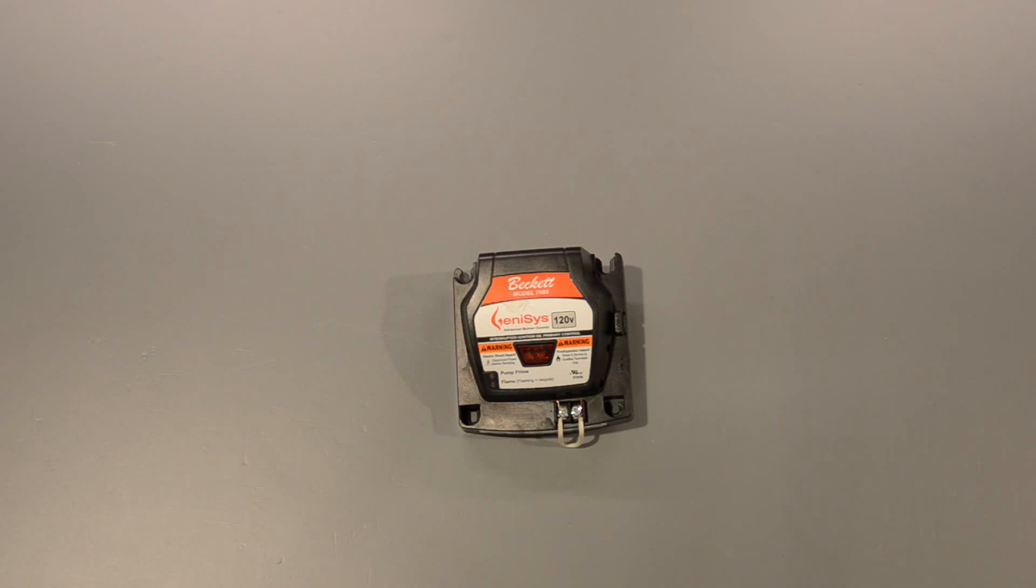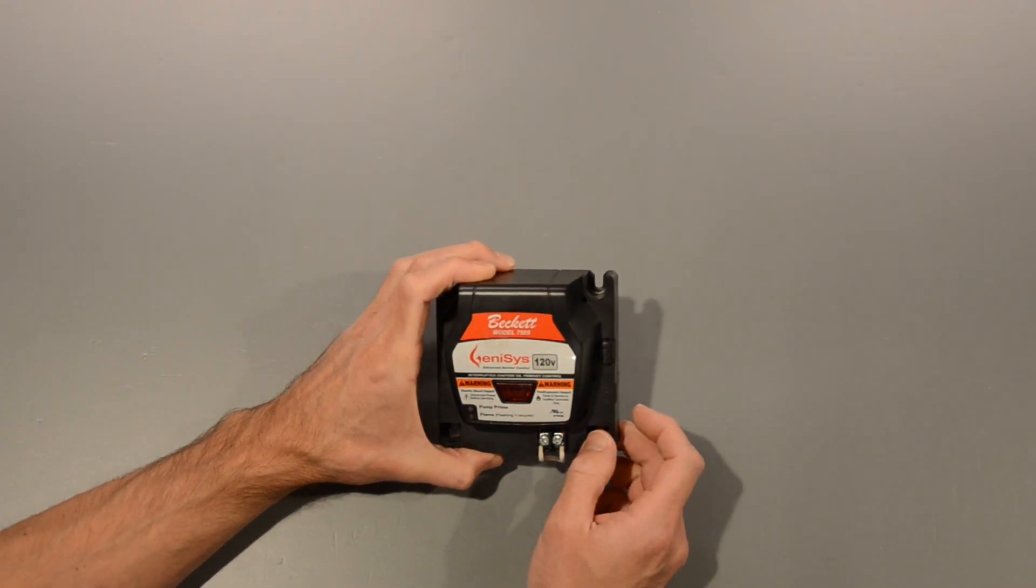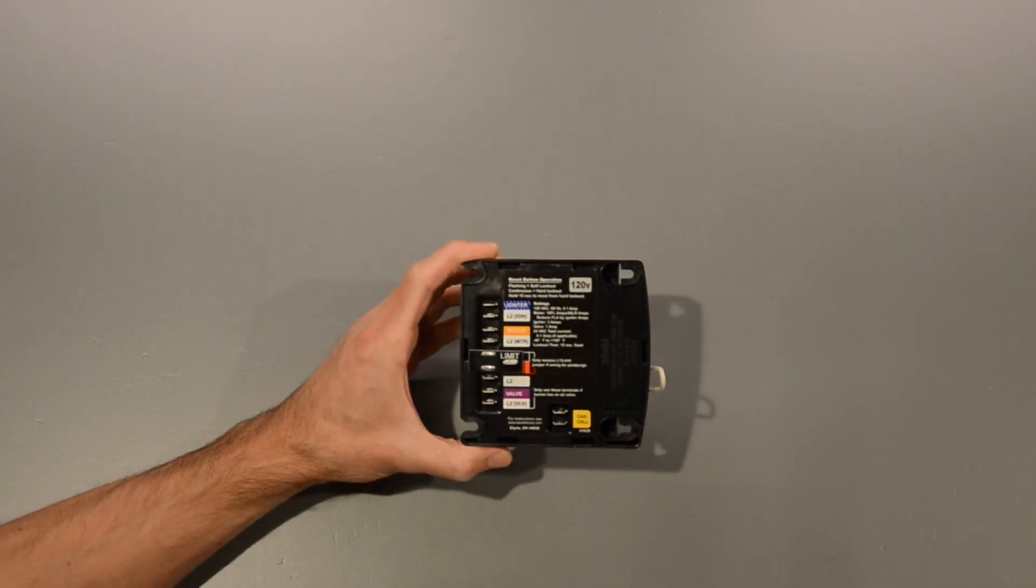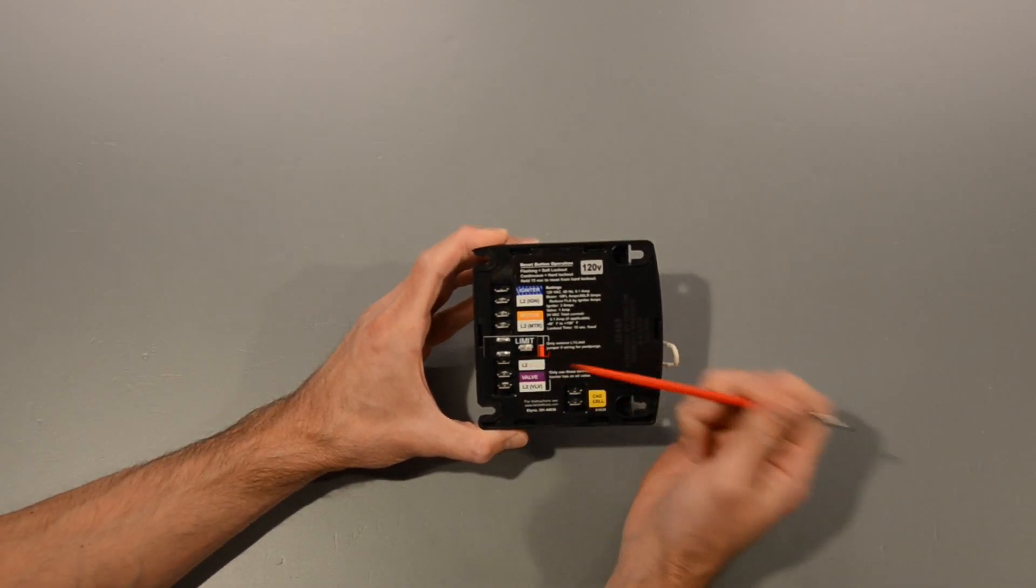The burner for my oil-fired boiler was tripping out on safety, and after some troubleshooting I determined that this burner control was faulty. This is a Beckett 7505, and the way this works is when there's a call for heat, 120 volt AC power is applied to these terminals.